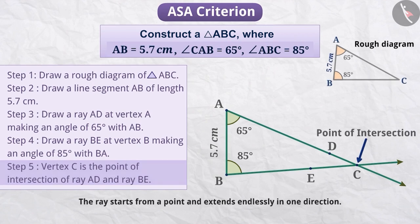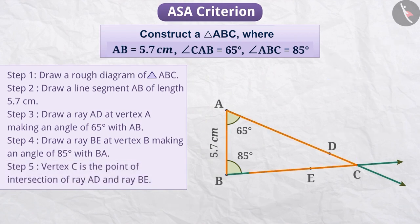In this way, we have obtained triangle ABC, where the length of AB is 5.7 cm, angle CAB measures 65 degrees and angle ABC measures 85 degrees.